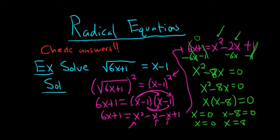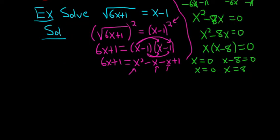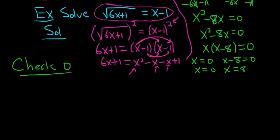And so again, we're supposed to check the answers. Now when you check the answers, you're supposed to use the original equation. Very, very important. So now we're going to plug the numbers back into this guy here. We're going to check 0. So we're going to put 0 here for all the x's.